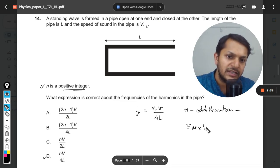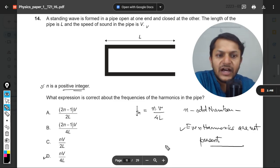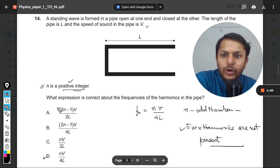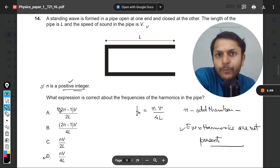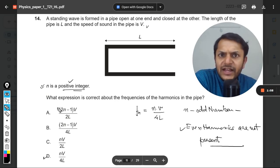Even harmonics are not present in this configuration. But the problem here is that they are using N as a positive integer, which would include both even and odd numbers. So we want to get rid of the even numbers. How can we do that? We can just replace this N.